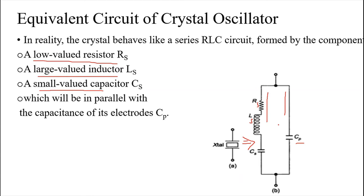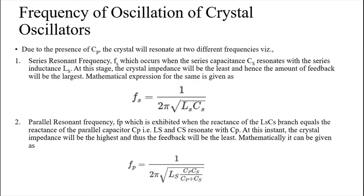Because the equivalent circuit has two arms, a crystal oscillator can produce two frequencies of oscillation depending on how you use it. The first is called the series resonance frequency and the other is called the parallel resonance frequency. If you connect the crystal in series with the output line, you get series resonance; if connected in parallel, you get parallel resonance.